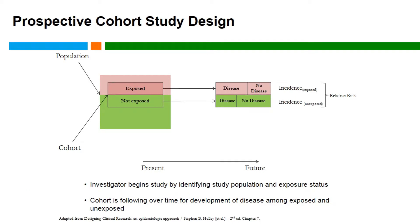Here's a diagram of a prospective cohort study. In this design you're going to start in the present, select your cohort from the overall population, and the individuals enrolled are classified as exposed and unexposed. These individuals are then followed longitudinally to assess the development of disease. The incidence of disease in the exposed and unexposed populations is ascertained, and the ratio of the two is the estimate of the relative risk.